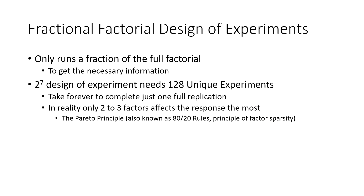Think about a 2 to the power 7 design of experiments, which has seven variables and two levels for each variable — it will need 128 experiments, which will take forever to complete. Most importantly, it would be ridiculous to run 128 unique experiments because in reality probably only two or three factors actually affect the response. So why invest all those resources assuming all seven variables are equally important?